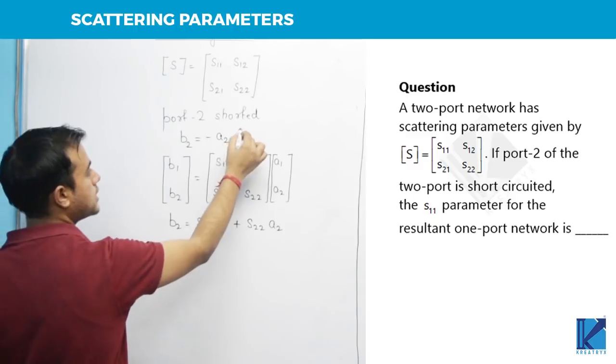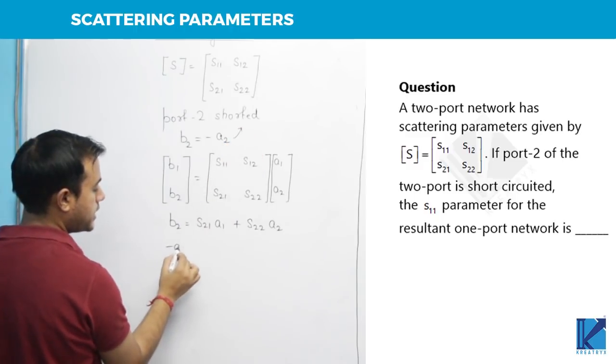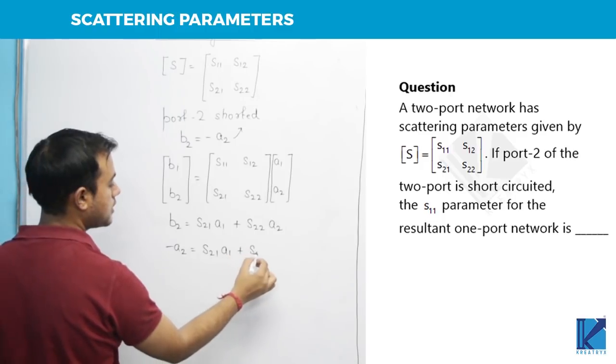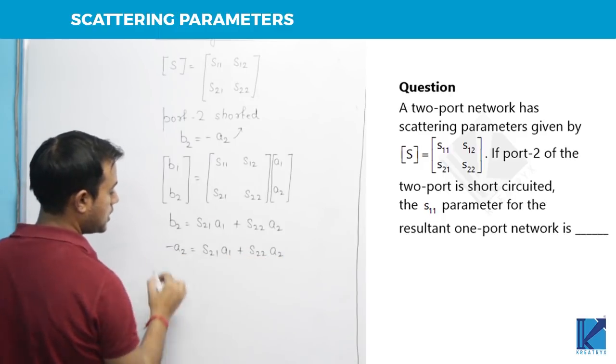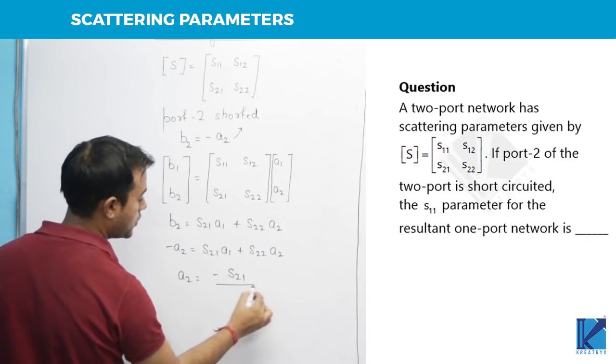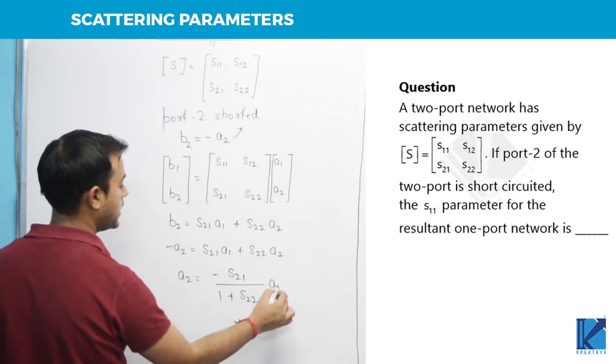Now I am saying due to short circuiting, B2 equal to minus A2 equals S21 A1 plus S22 A2. So how much is A2? A2 is negative of S21 by 1 plus S22, A1.